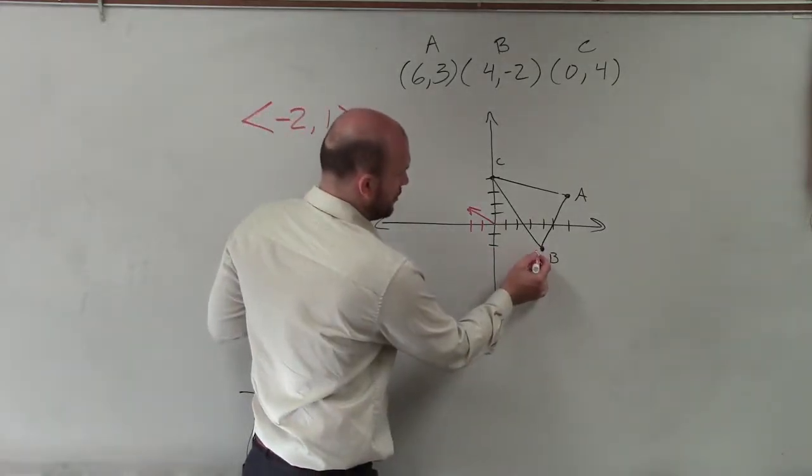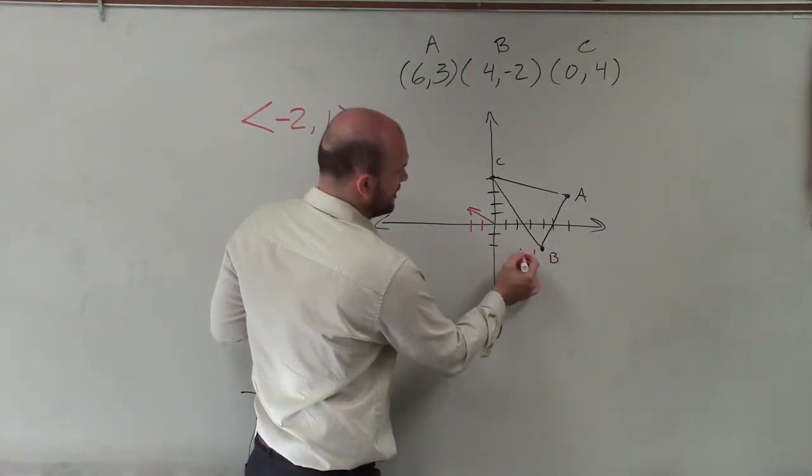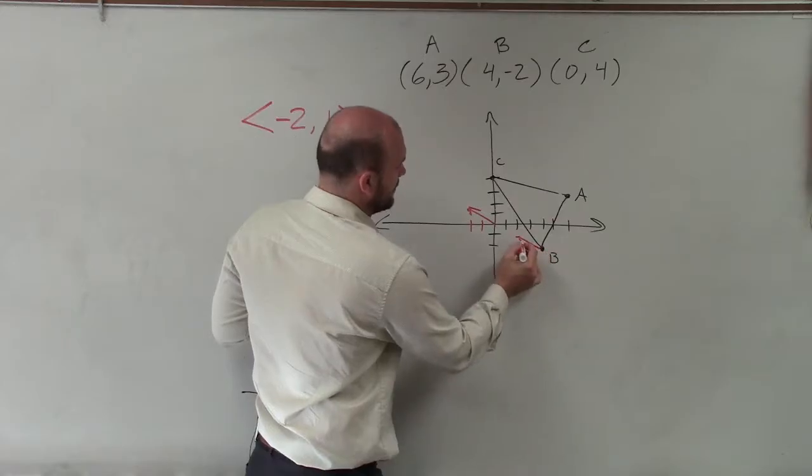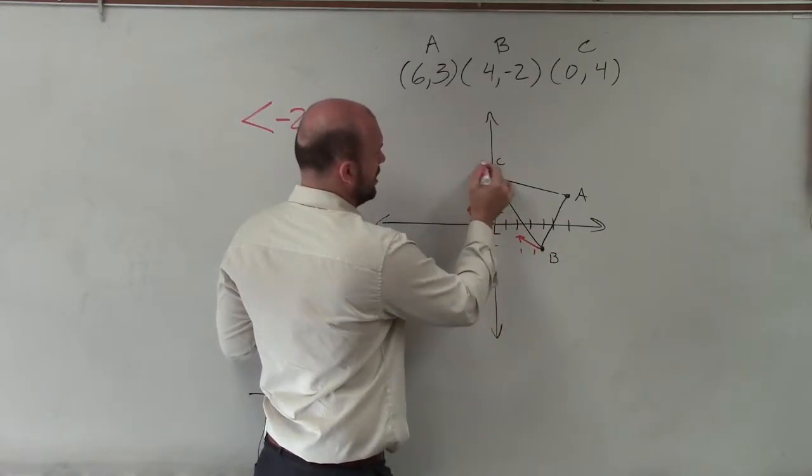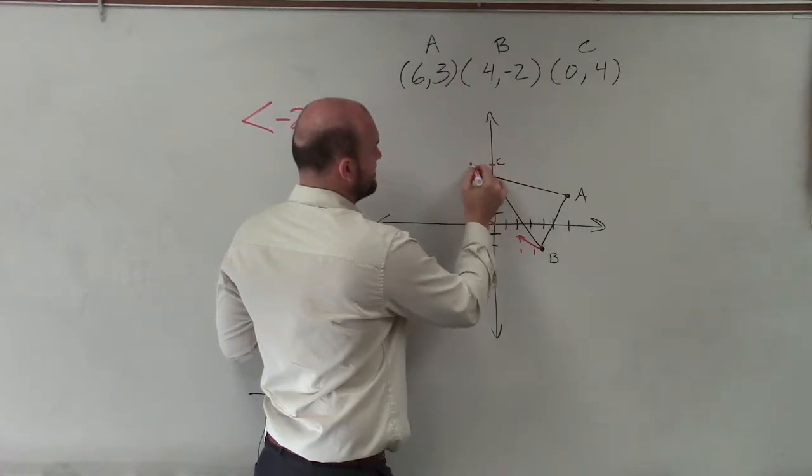So if I went to 1, 2 units, up 1, that's going to be my new vector. If I go over 2, up 1, that's my new C vector.